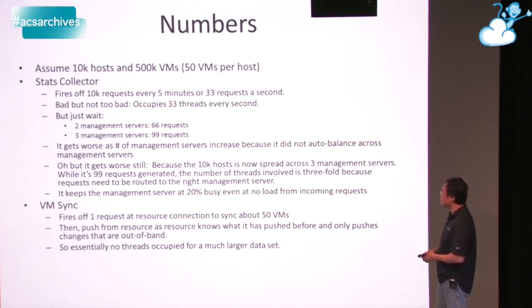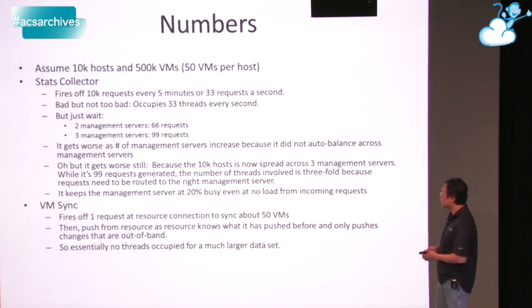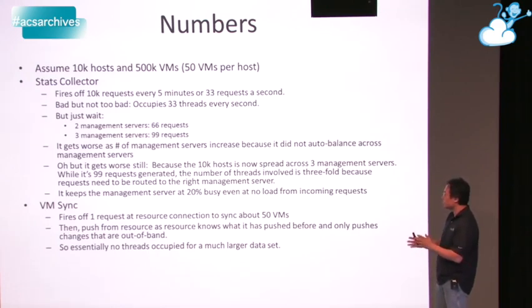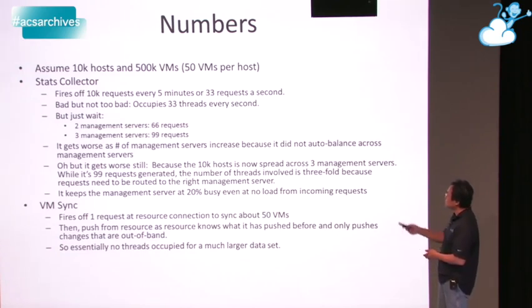With VM Sync, we fire off one request at resource connection time covering about 50 VMs, taking 5 to 10 seconds. Then it pushes from the resource, because we trust the resource to know what has changed since the last sync point. It only sends changes that were not expected on the management server. Essentially we have no threads occupied for a much larger data set — 500k VMs — and not much processing at all happening for VM Sync.